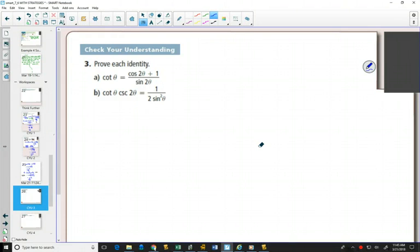This question says prove, so we're going to do proofs. Now that we've learned new identities, double angle identities, they can appear in proofs as well. So how do we start off a proof? Well, we start off...